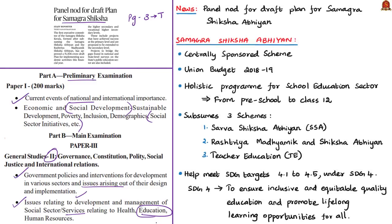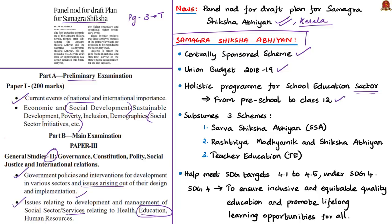The news article discusses the panel approval for the draft plan of Samagra Shiksha Abhiyan in Kerala. From the examination point of view, we shall focus on Samagra Shiksha Abhiyan itself. It was announced as a centrally sponsored scheme in the Union Budget 2018–19, introduced as a holistic program for school education covering from preschool to class 12. It has subsumed three existing schemes: Sarva Shiksha Abhiyan, Rashtriya Madhyamik Shiksha Abhiyan, and Teacher Education. It will help India meet SDG 4, especially Targets 4.1 and 4.5.